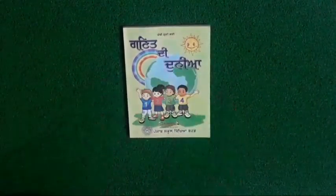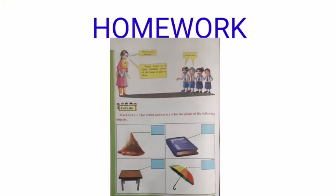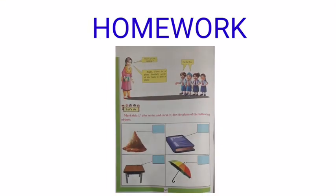Children, we learnt that the floor, table, and book are planes. Now children, from page number 120 of your book, you have to solve these sums.